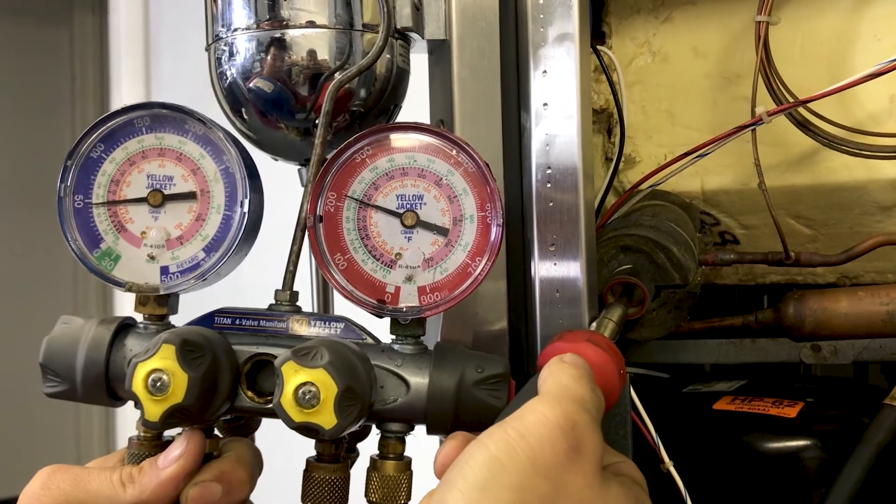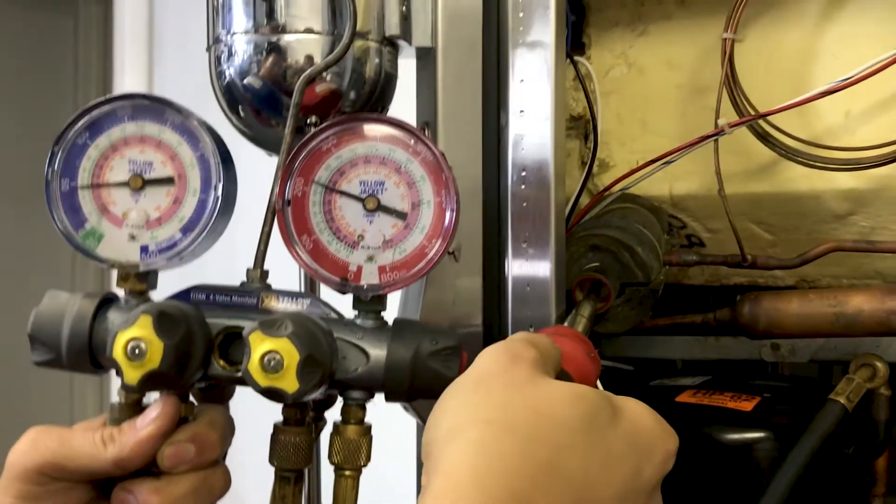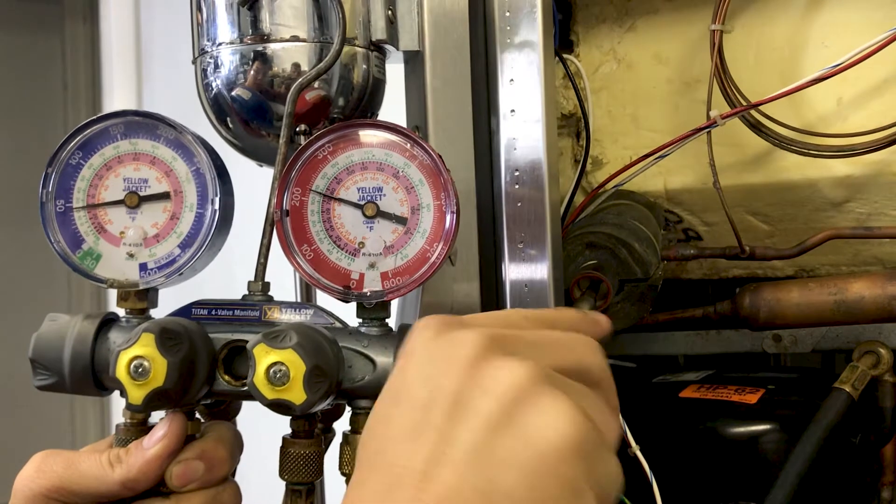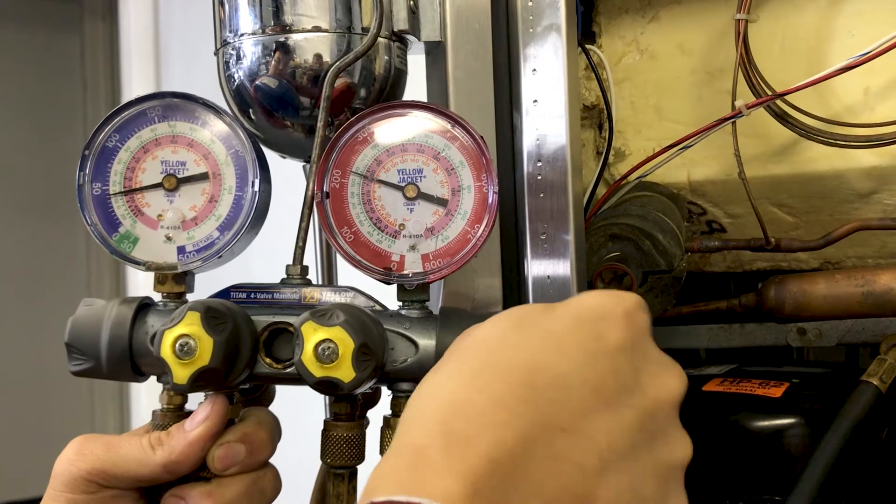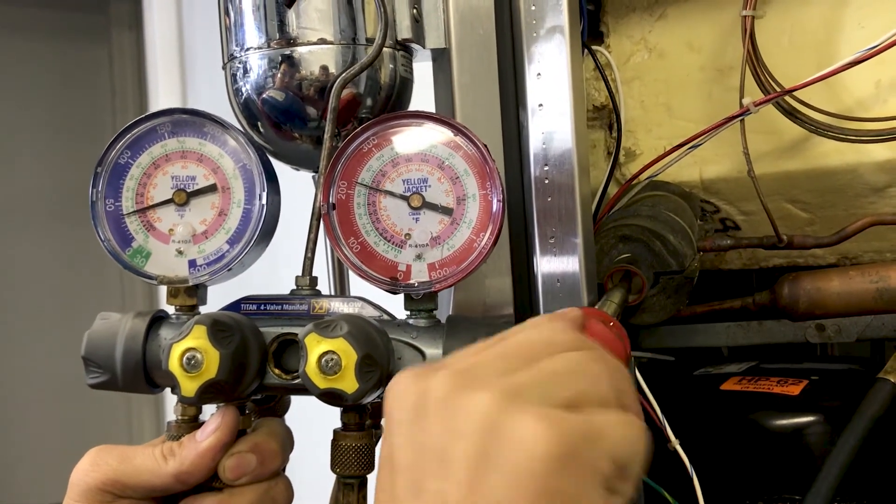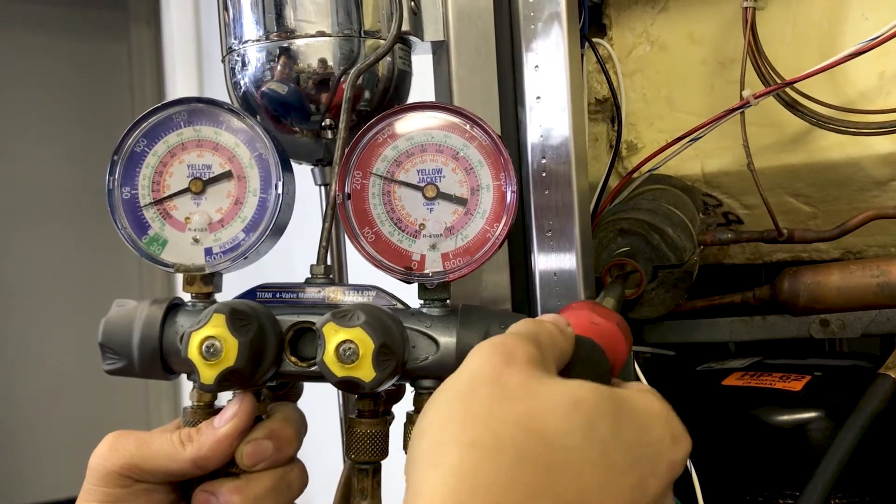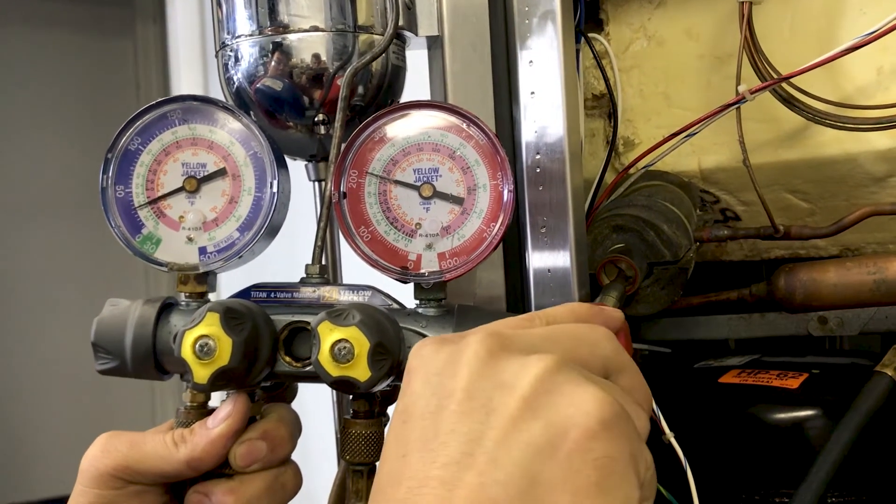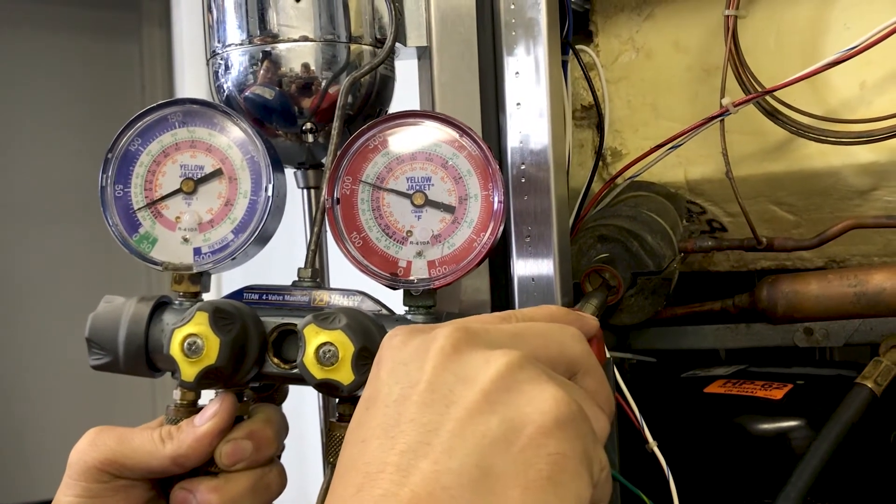If you want the pressure to go further down, adjust it counterclockwise. And as you see, the low side pressure will start inching down. There we go. As you see, the counterclockwise adjustment will drop the pressure down as we're floating around 25 right now. And going down to 20.